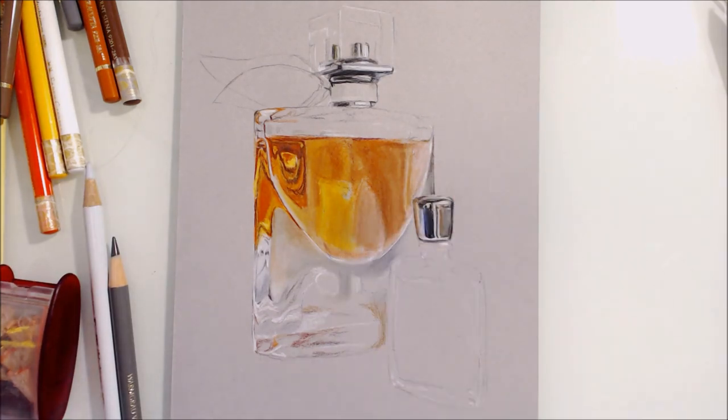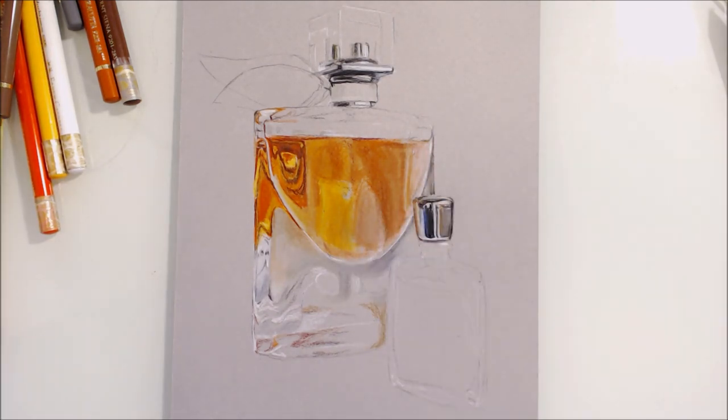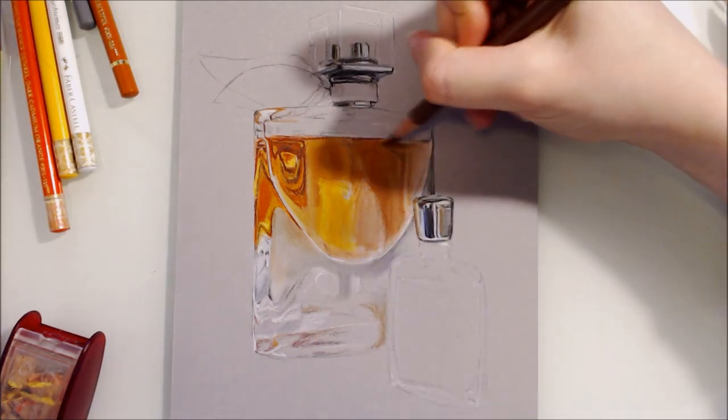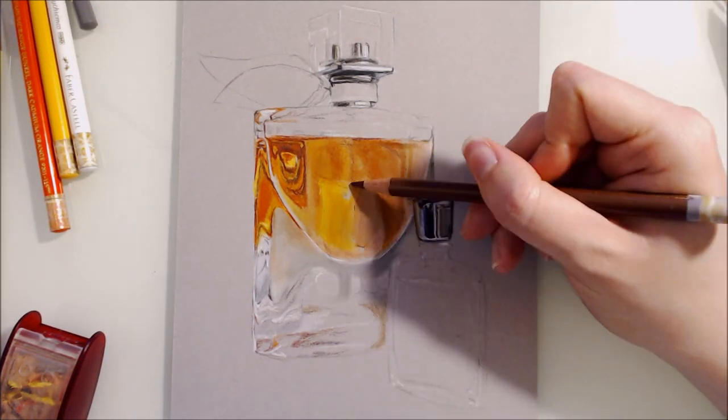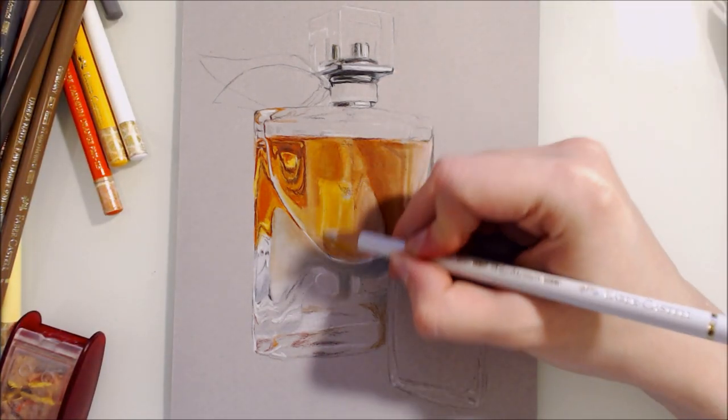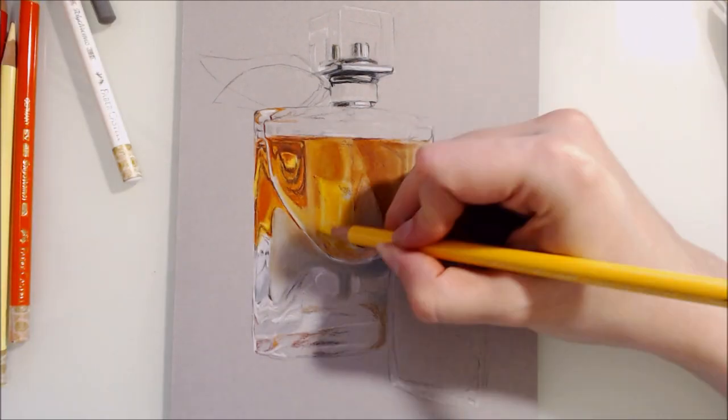But anyway, mistakes aside, when drawing colorless glass, it can be helpful to think that the colors inside the glass are just the colors of the environment behind it and around it. And to create the form of the glass, you're just rearranging these colors and using the right shapes to help describe the form.